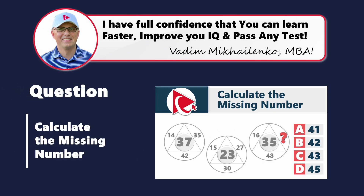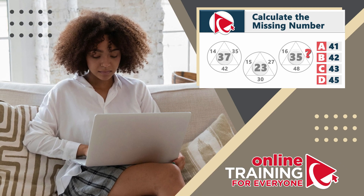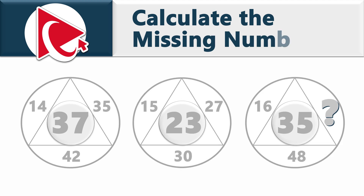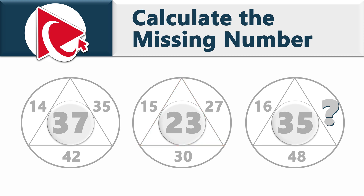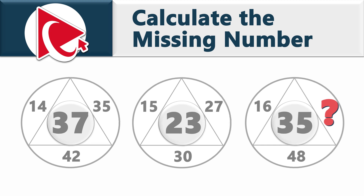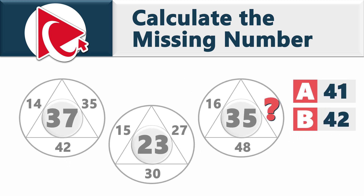You're presented with three shapes, each having two circles, a triangle, and four numbers inside. The first shape has numbers 14, 42, 35, and 37 in the middle. The second shape has numbers 15, 30, 27, and 23 in the middle. The third shape has 35 in the middle and numbers 16, 48, and a missing number. Select from choices: A — 41, B — 42, C — 43, and D — 45.